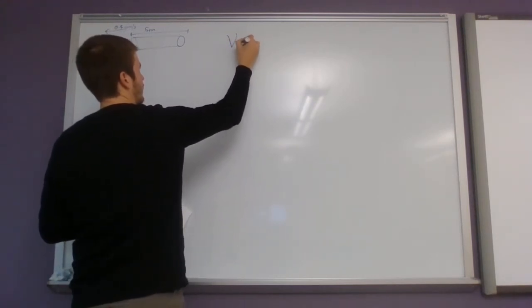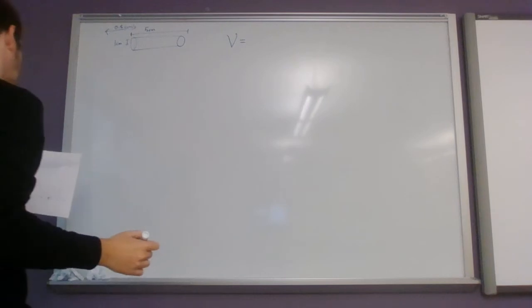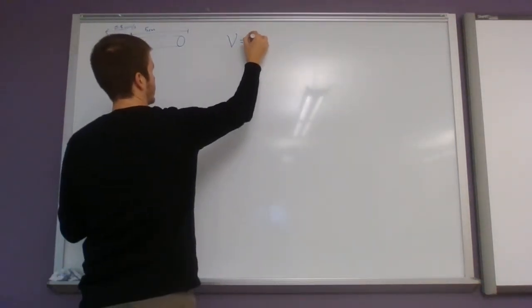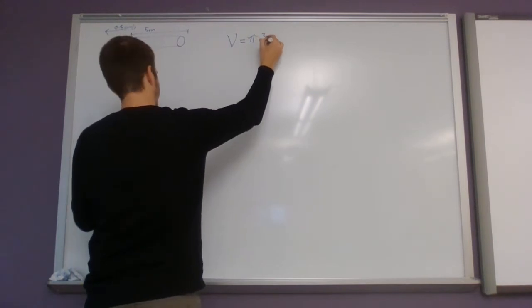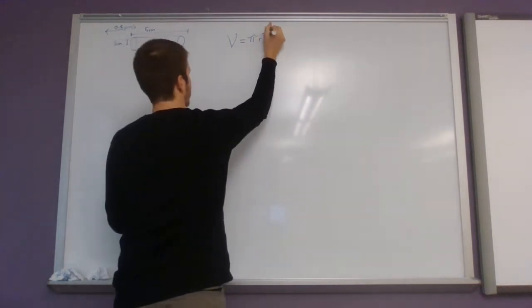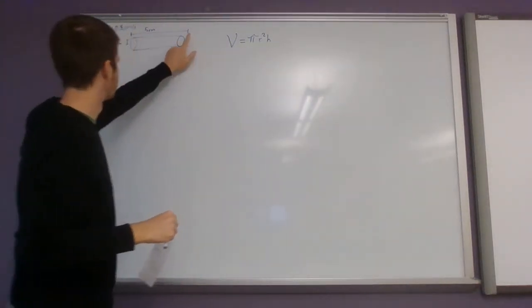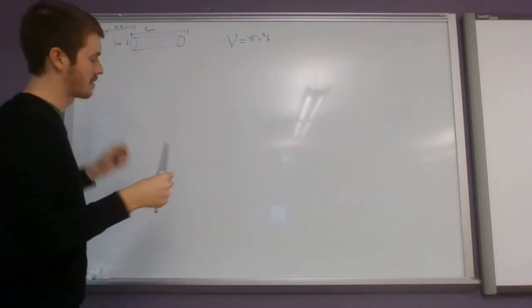So I know that the volume of a cylinder is going to be pi r squared times height. And just in this case, height is referring to our length. It's the same measurement.